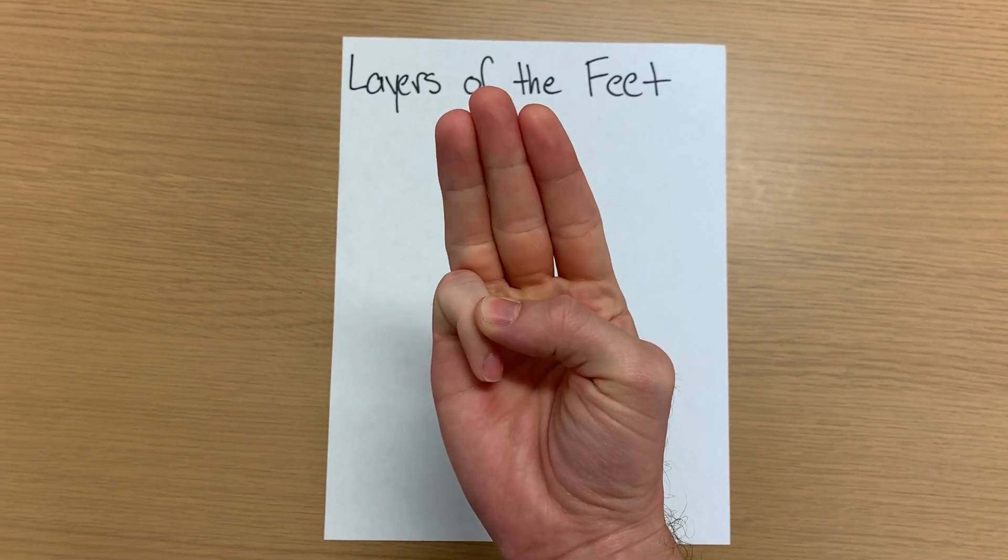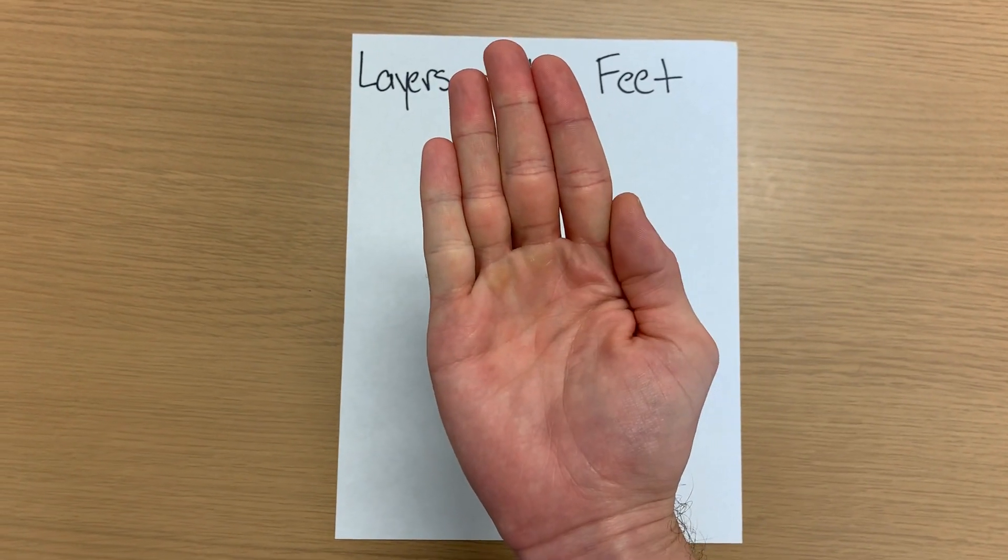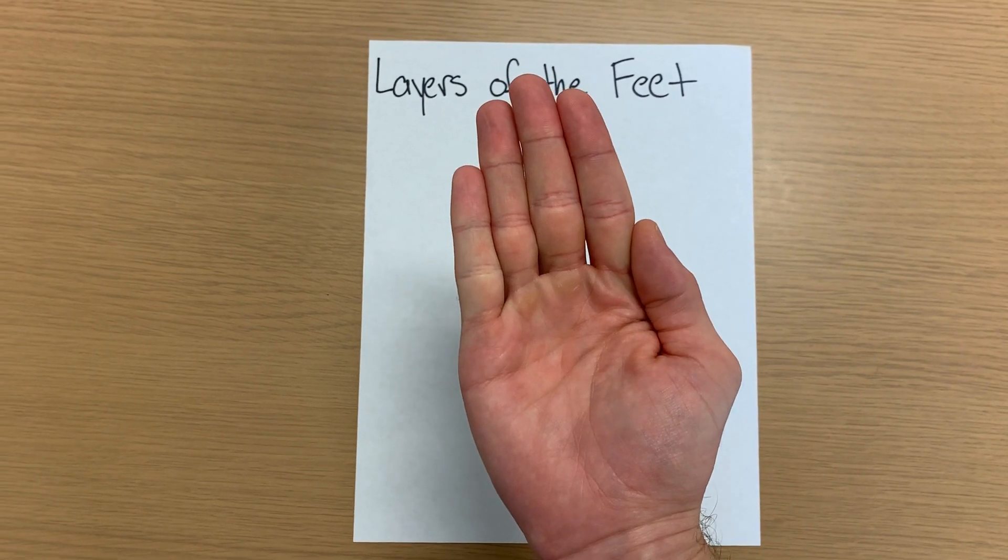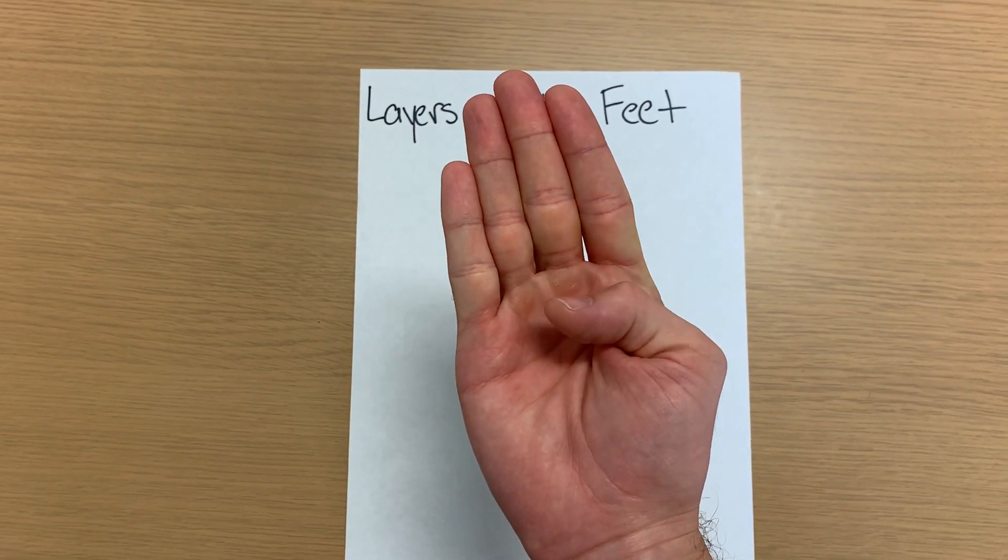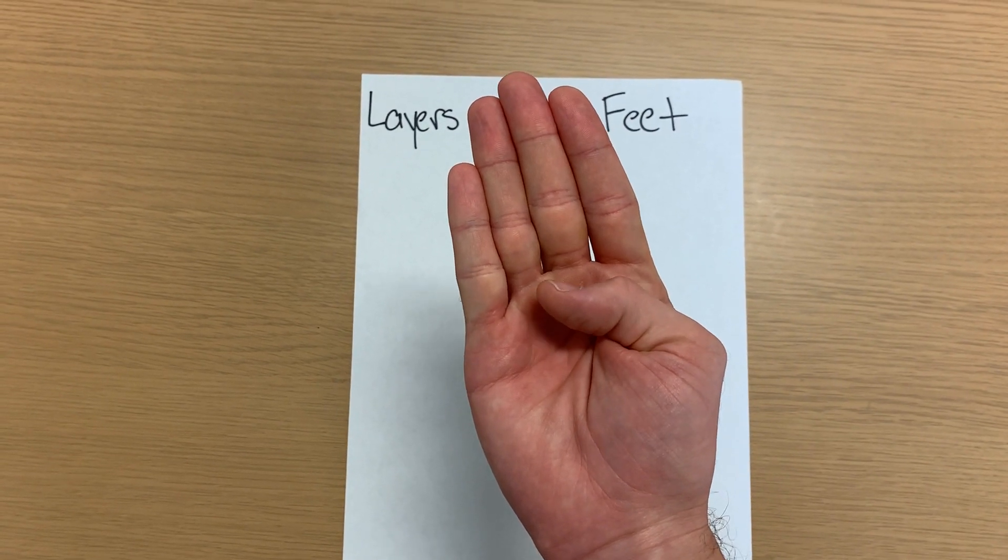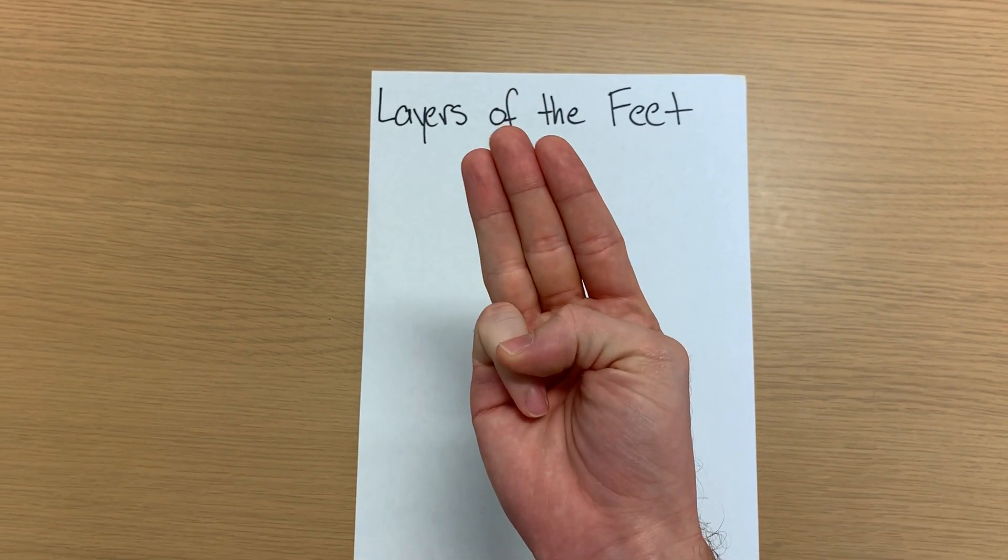Third layer, we have our adductor hallucis. Remember those two heads, oblique and transverse, flexor hallucis brevis, and flexor digiti minimi brevis.